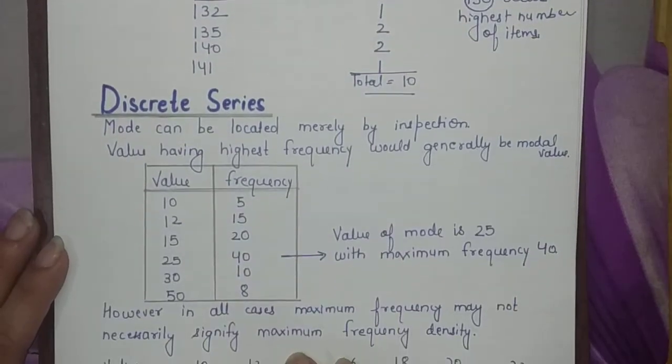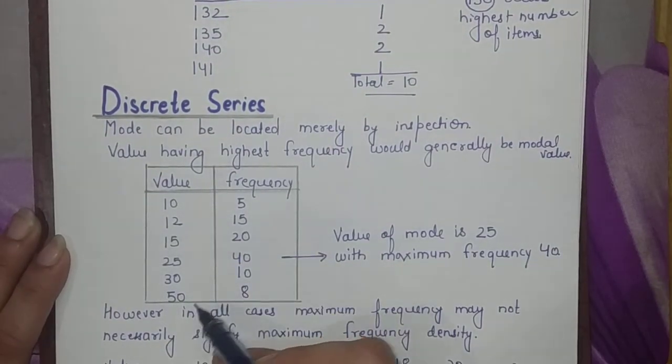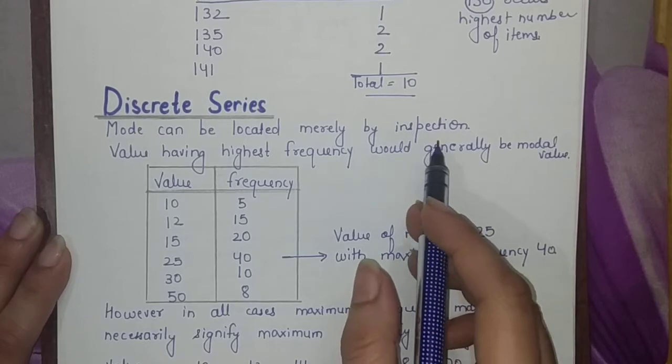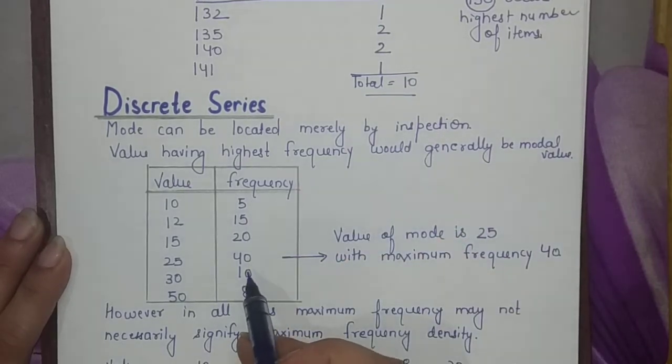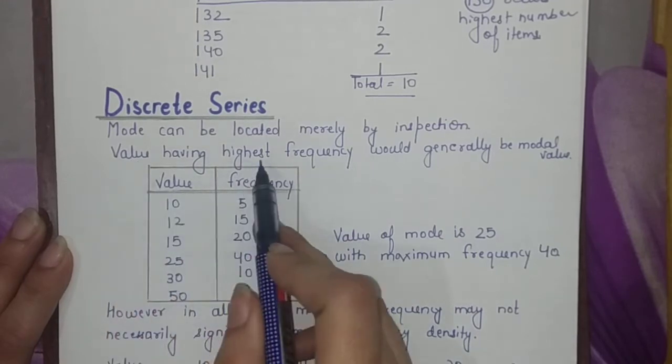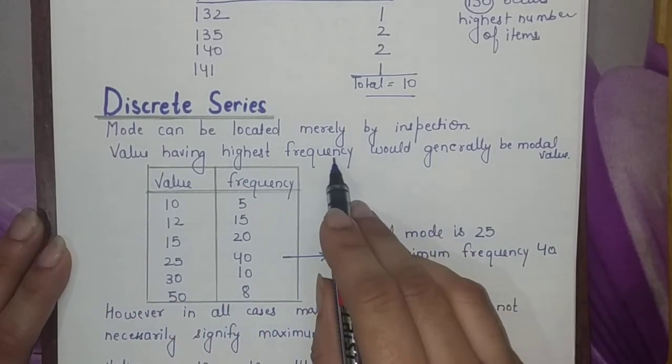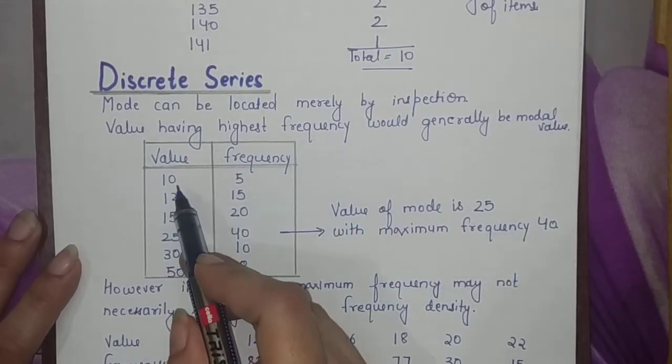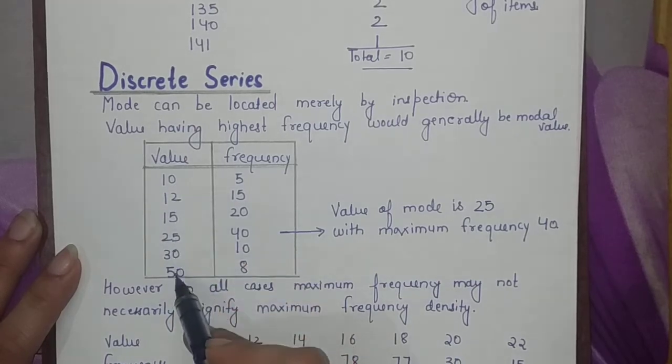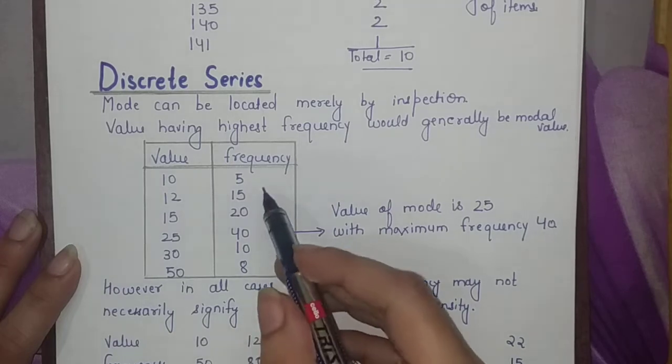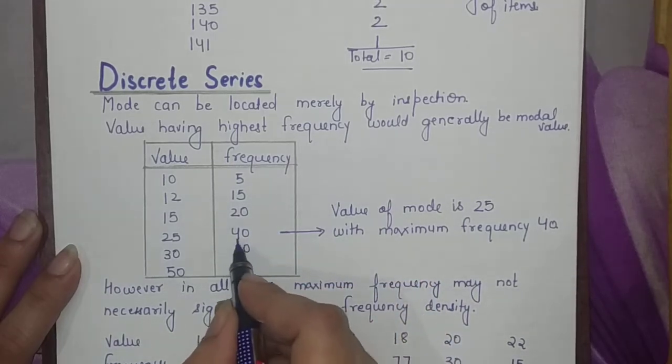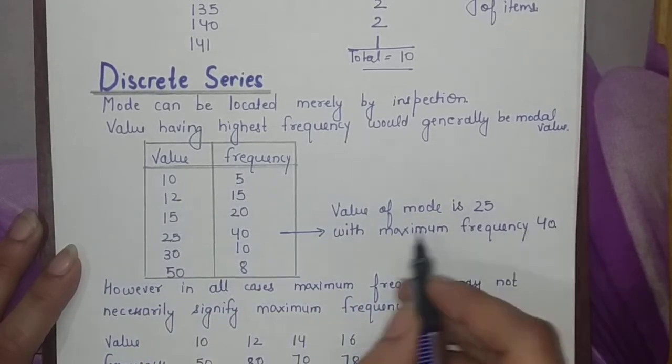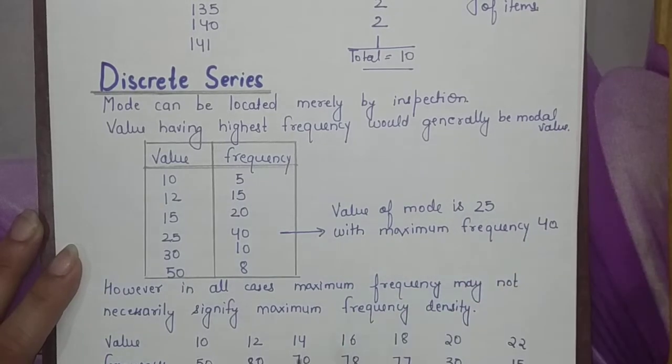In discrete series, you have an X series and frequencies given. Mode can be located merely by inspection - just by a quick look you can tell what the mode is. The value having highest frequency will be the modal value. For example, if X values are 10, 12, 15, 25, 30, 50 with frequencies 5, 15, 20, 40, 10, 8, then 40 is the highest frequency. The value corresponding to 40 is 25, so the value of the mode is 25 with maximum frequency 40.